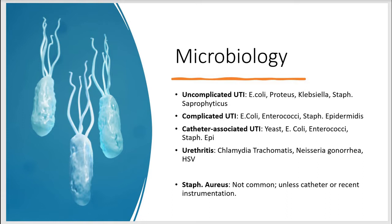In catheter-associated UTI, we have yeast, E. coli, Enterococci, and Staph Epi. Some patients will have urethritis, and these are mostly caused by Chlamydia, Neisseria gonorrhea, or HSV. Sometimes we come across patients with Staph aureus — that's not common in the bladder unless there's a catheter or recent instrumentation. If patients do have Staph aureus in the bladder, it could also be seeded by bacteria in the blood.